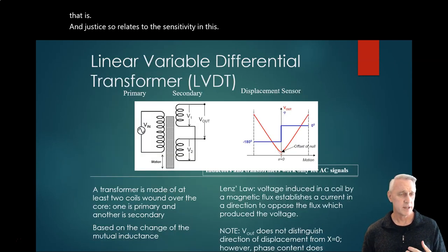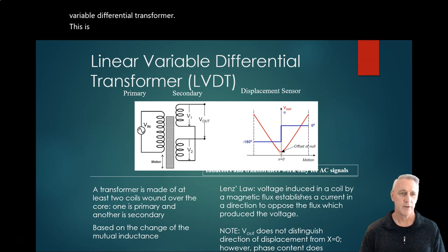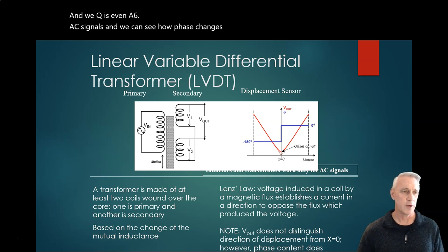Another way that we can use inductance is what we call an LVDT, a Linear Variable Differential Transformer. This is where we can see how a phase changes, and we can use AC signals to see how a phase changes depending upon if we're going in one direction or another direction.